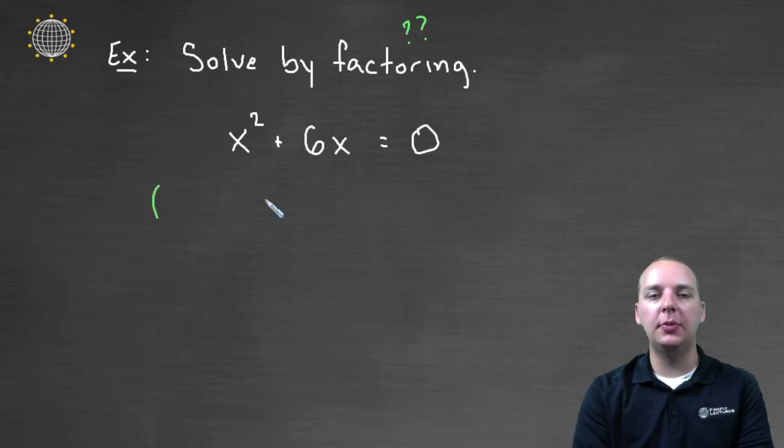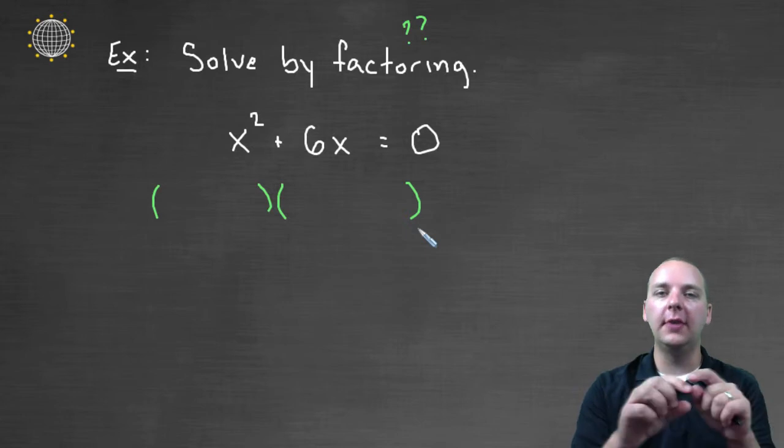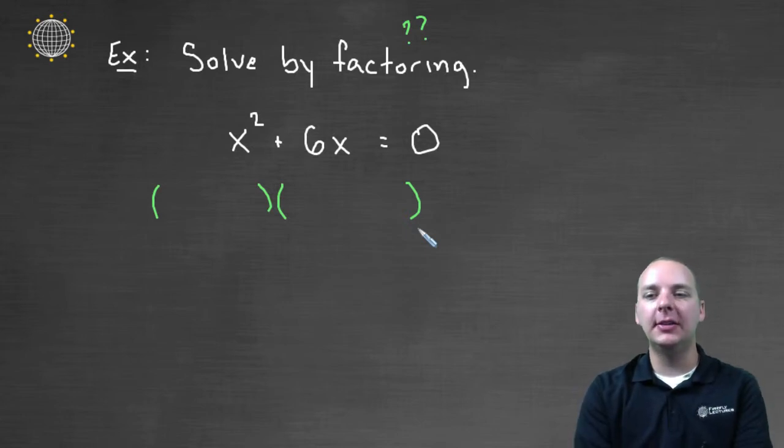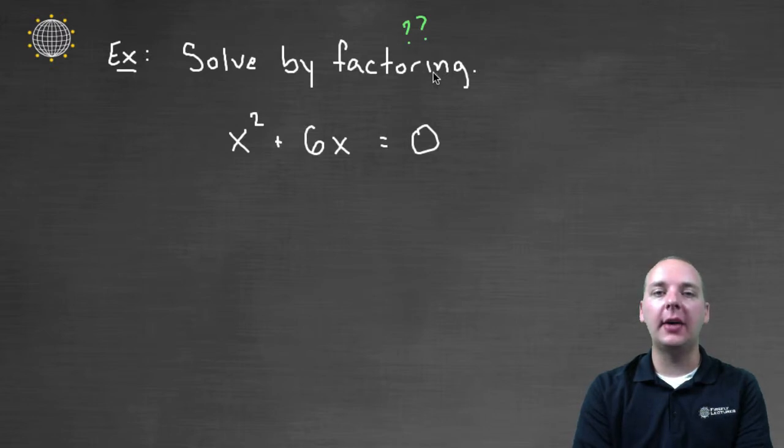Usually we'll set up two empty sets of parentheses and try to figure out what will FOIL to give us our trinomial, but this isn't a trinomial. Don't forget, we have a lot of different ways to factor quadratics. We can look at whether these two terms have any common factors, and that's what students often forget—there are different ways to factor quadratics.